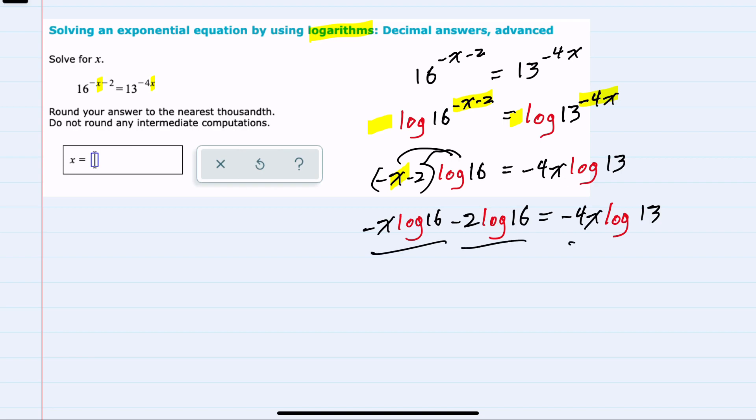two on the left and one on the right, but only two of those terms have the variable x. So we would want to move those to the same side of the equation, and I can do that by adding this term on the left,